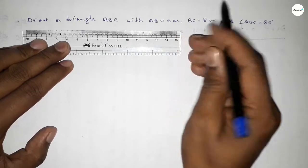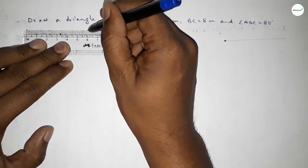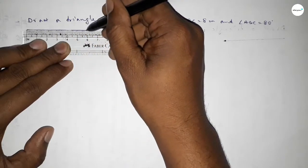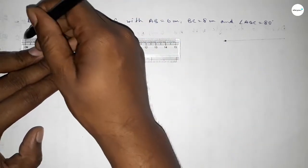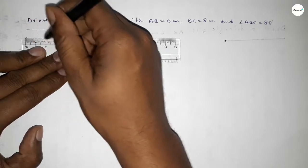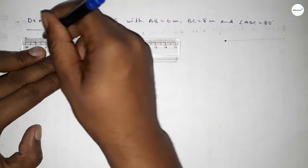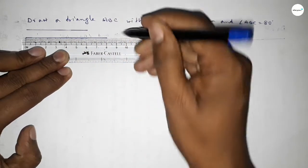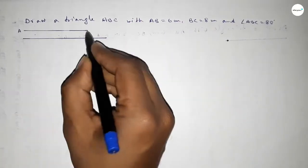First of all we have to draw a line of length 6 centimeter. So drawing here a line of 6 centimeter. Then we have to draw the line 8 centimeter — starting 0, 1, 2, 3, 4, 5, 6, 7, 8 — so this is 8 centimeter.